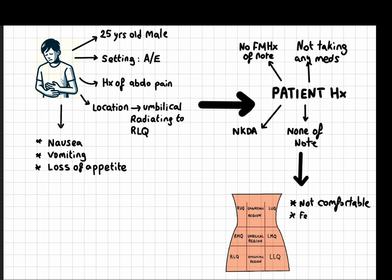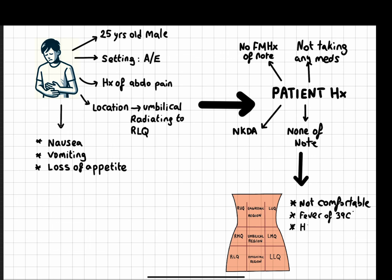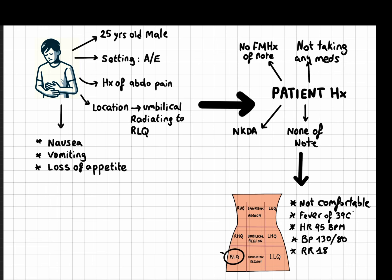The vital signs showed a low-grade fever at 39 degrees, a heart rate of 95 beats per minute, blood pressure of 130 over 80, and a respiratory rate of about 18 breaths per minute. On examination of his abdomen, he is tender on palpation of the right lower quadrant, with signs of guarding and rebound tenderness. You also find a positive Rovsing's sign on palpation.